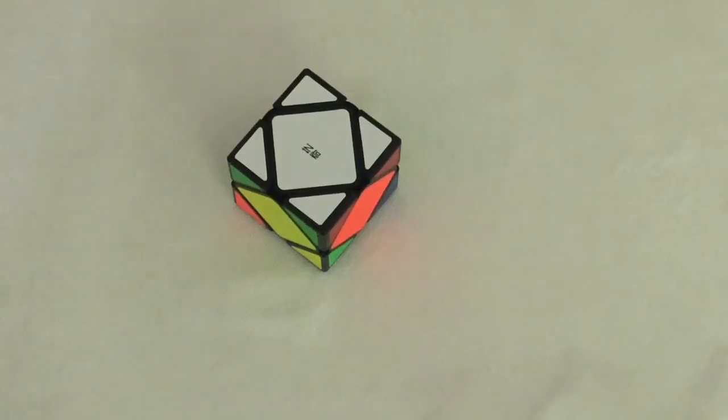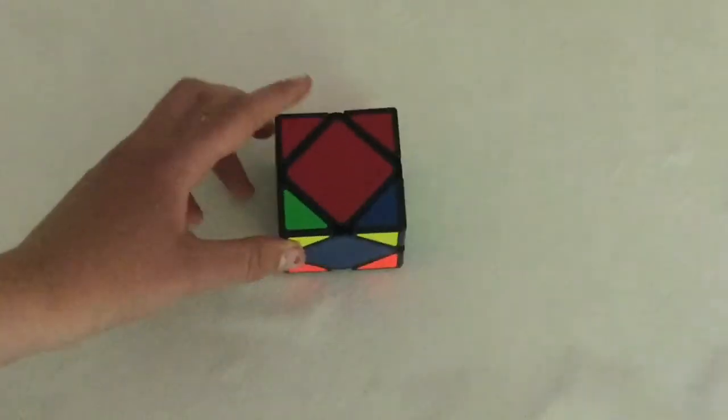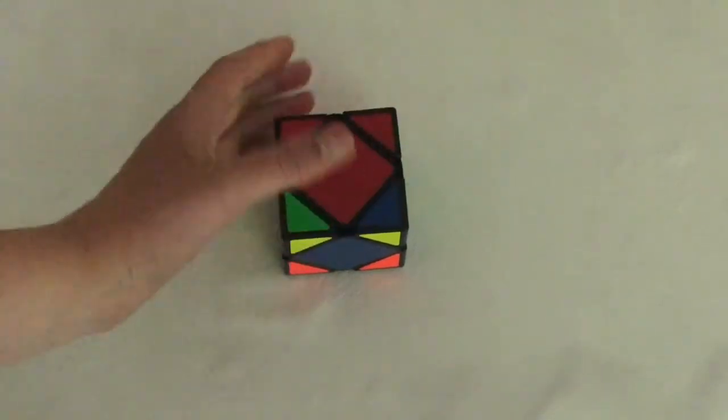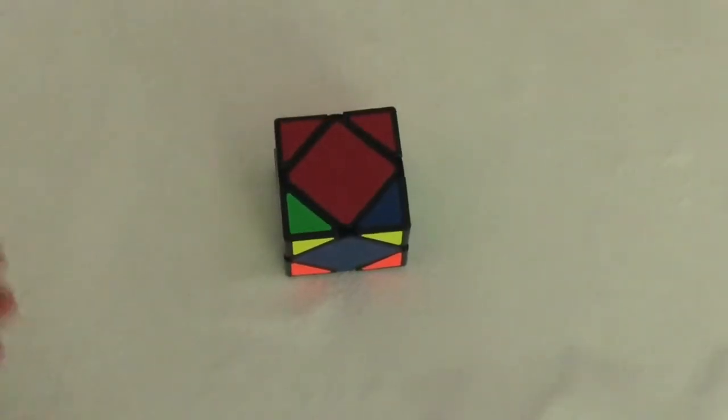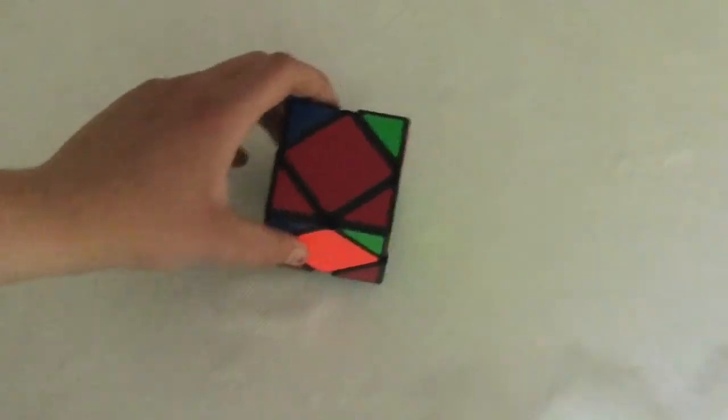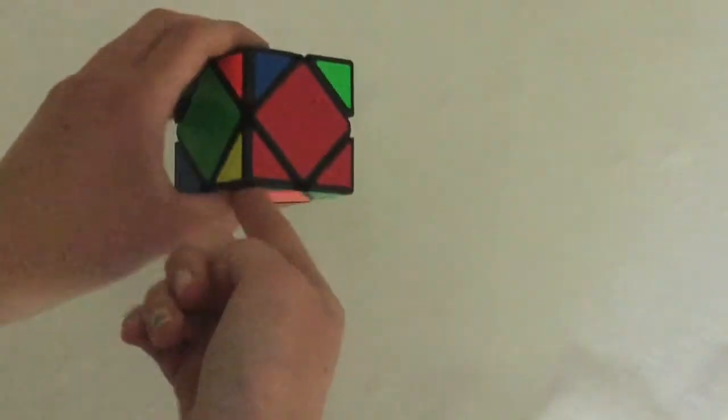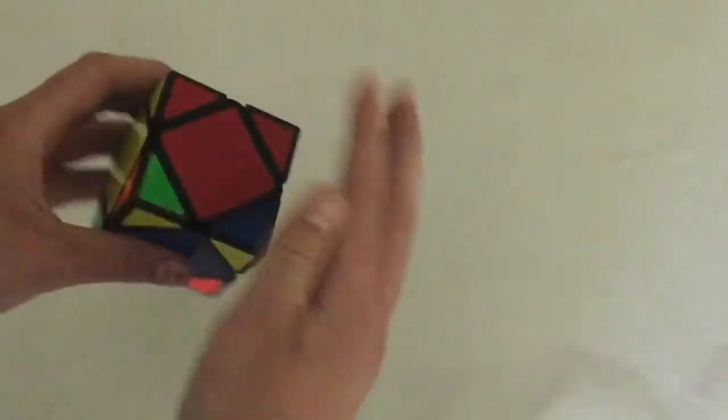For the yellow side, we're going to flip over the cube. There are three different possibilities for this. The first one is that the entire yellow side will be solved, in which case just skip ahead in the video. The second solution is that only the center pieces are here, none of the edge and corner pieces. The third solution is what I have—none of the pieces are here.